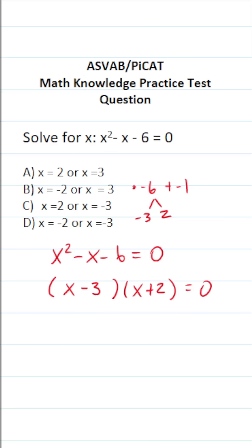Now that we've factored this one, we're going to break these apart and set them each equal to 0 independently. So it's going to be x minus 3 equals 0 and x plus 2 equals 0.